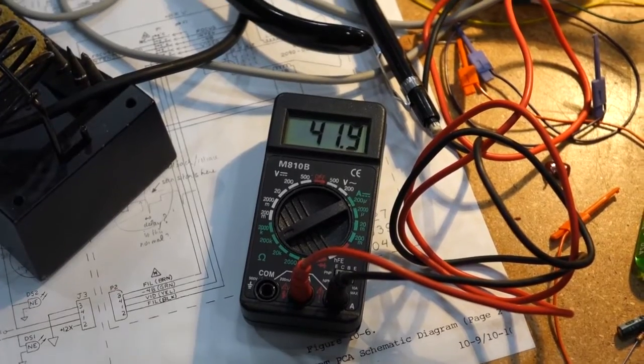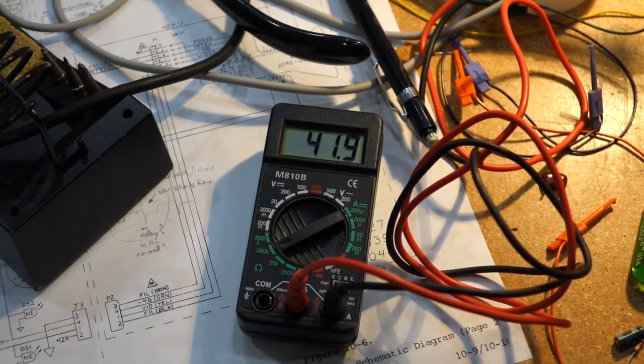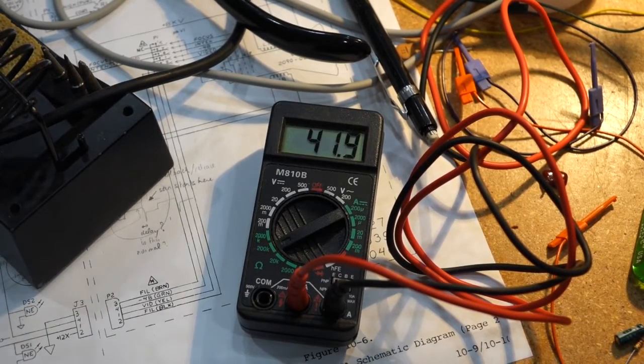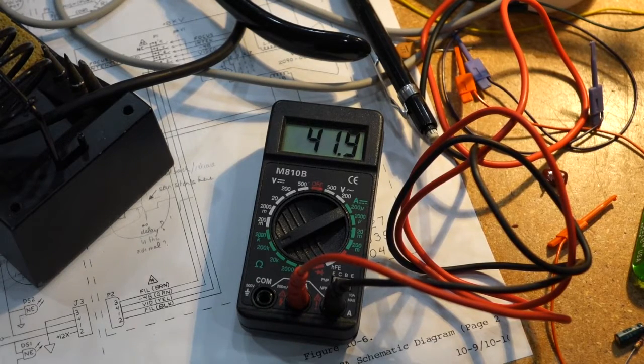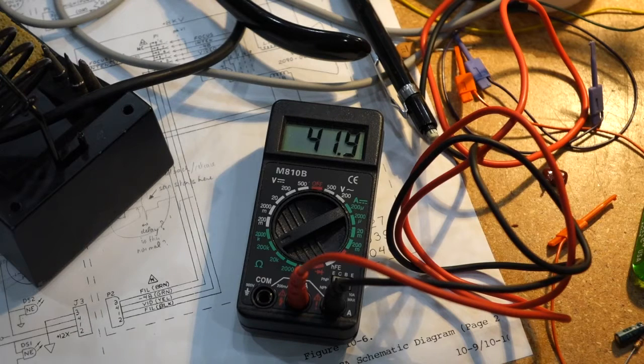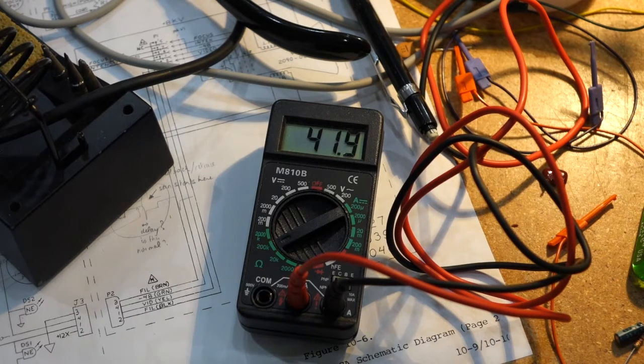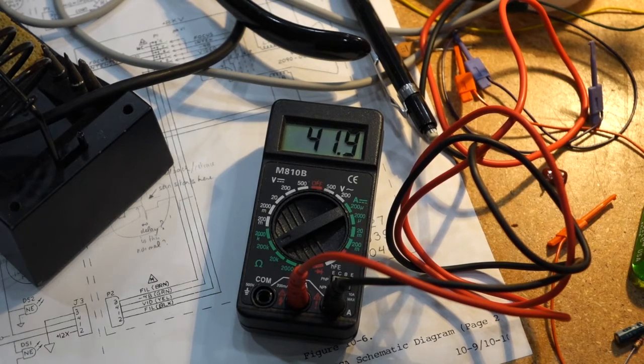And that's the resistor. It should be 39k and it's 42k, which would make the pulse longer rather than shorter. So that's not it either. I'm sort of afraid my timer, the 555, is going, which means that until I change it, my problem is going to return.